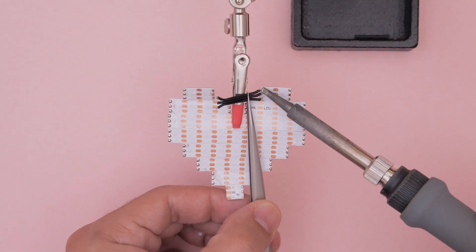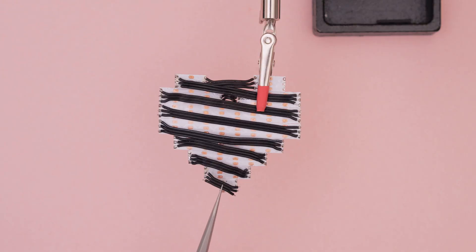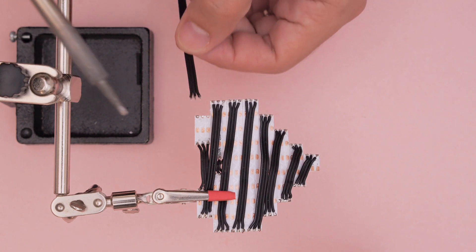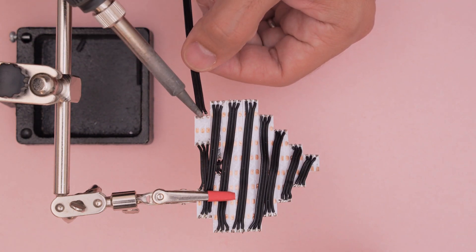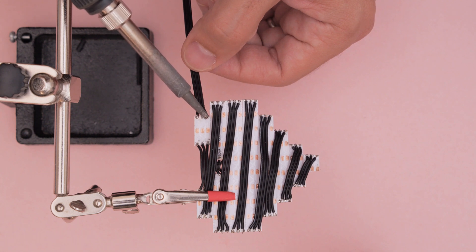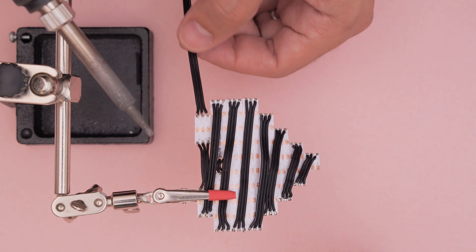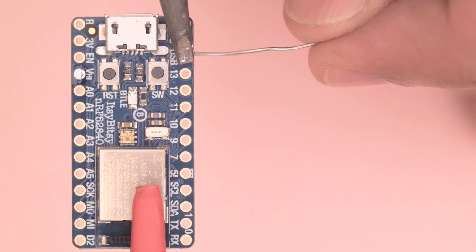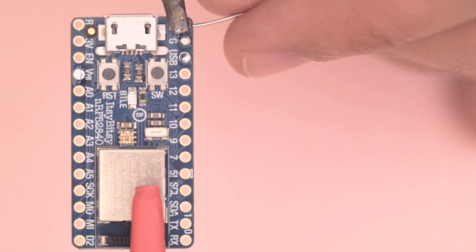We made sure to reference our wiring diagram to get the correct polarity for each connection. The first NeoPixel in the chain is wired to a longer piece of wire that will act as the necklace. The three connections from the LED matrix are wired to pin number 5, voltage, and ground.